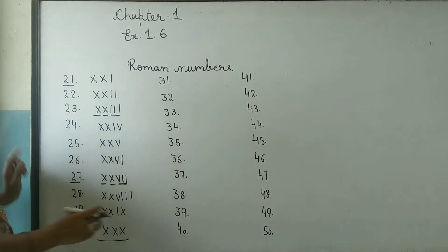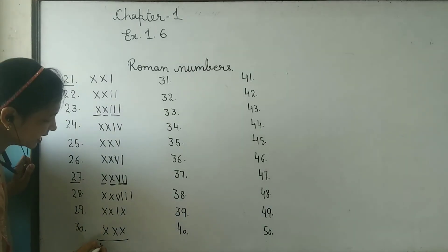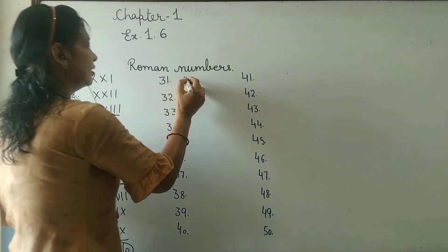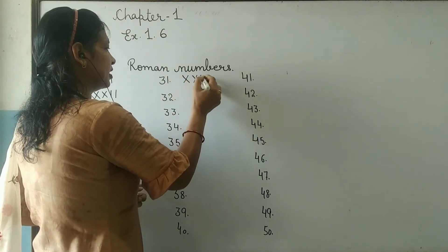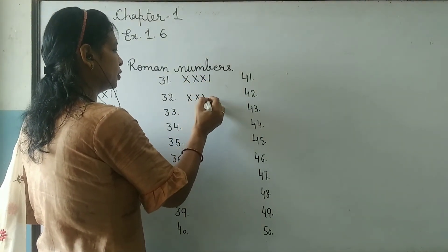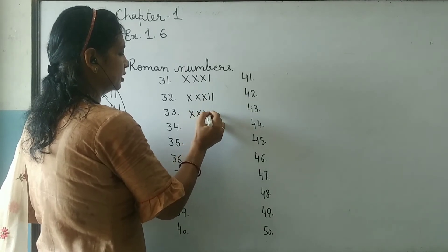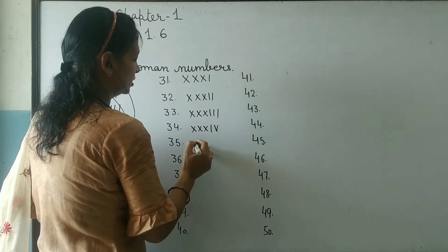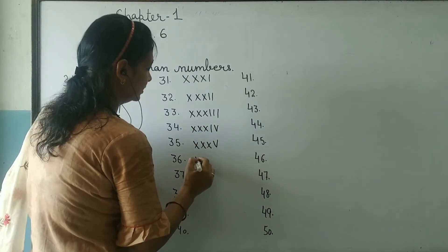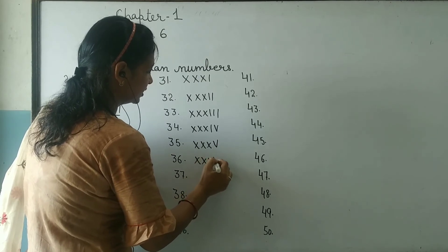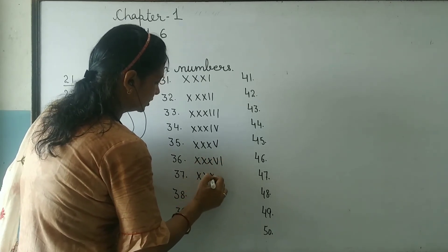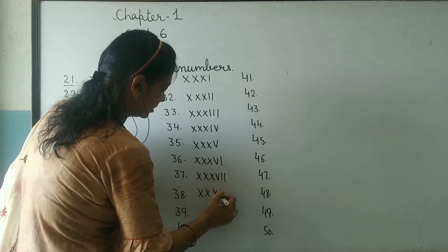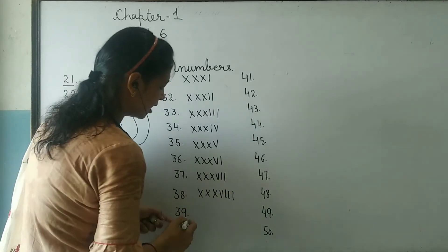30, how do we write? Three tens. 10 plus 10 plus 10, that's XXX. Now 31, we continue the same way. 31 is XXXI. 32 is XXXII. 33 is XXXIII. 34 is XXXIV. 35 is XXXV. 36 is XXXVI. 37 is XXXVII. 38 is XXXVIII. 39 is XXXIX.